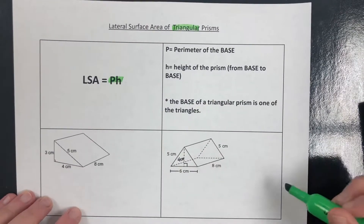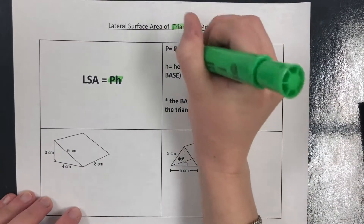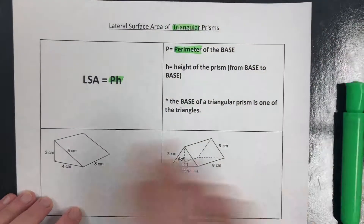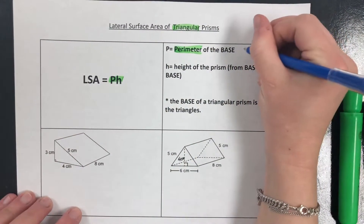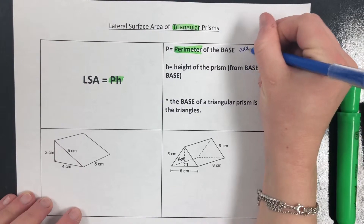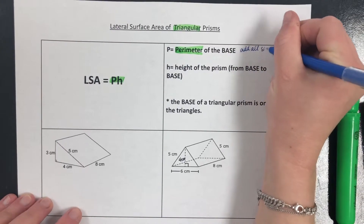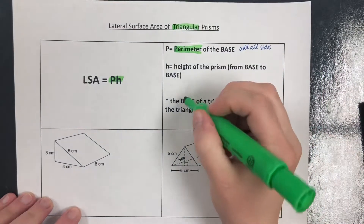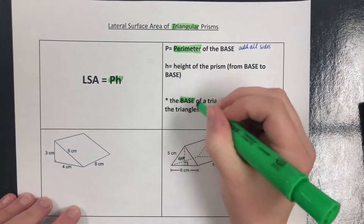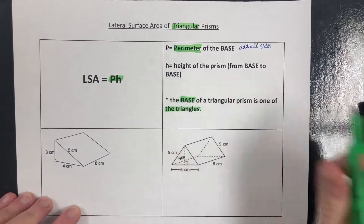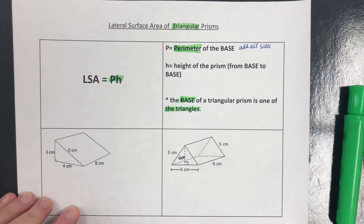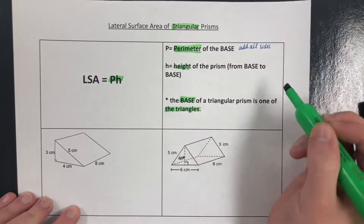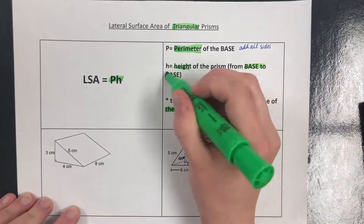There are just two things we need: the perimeter of the base — so add all the sides. Since our base of a triangular prism is a triangle, that means we'll add just the three sides of the triangle together. And then H, the height of the prism, is still from base to base.